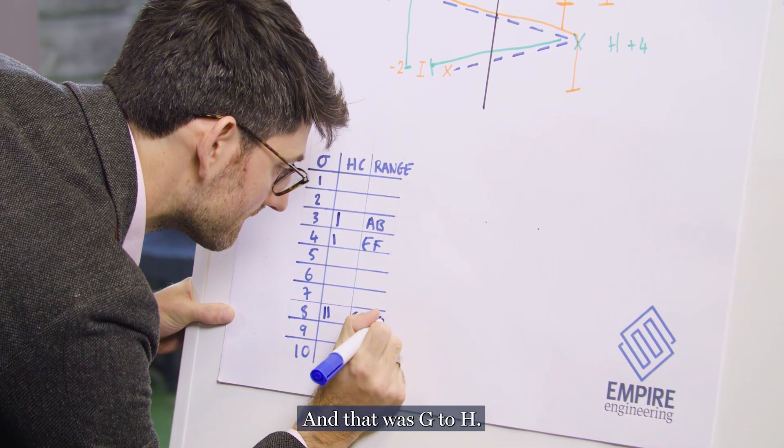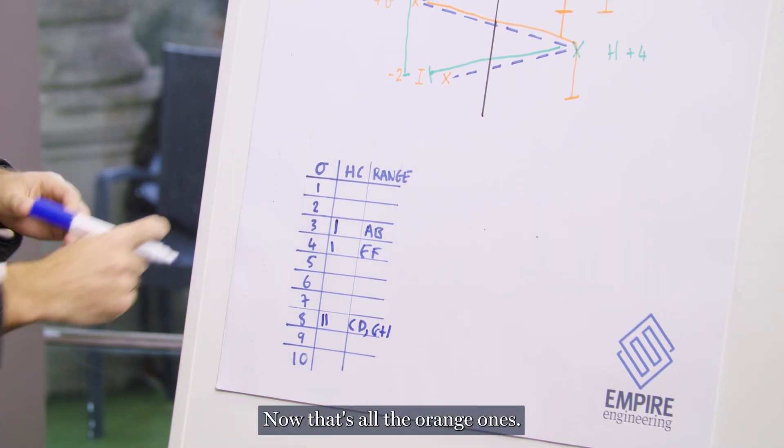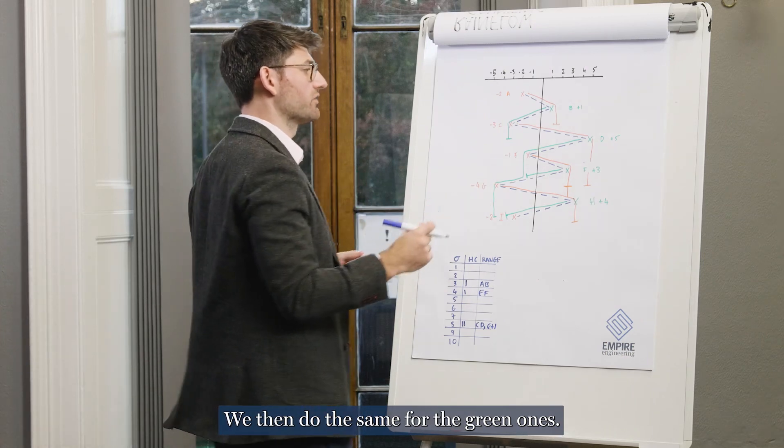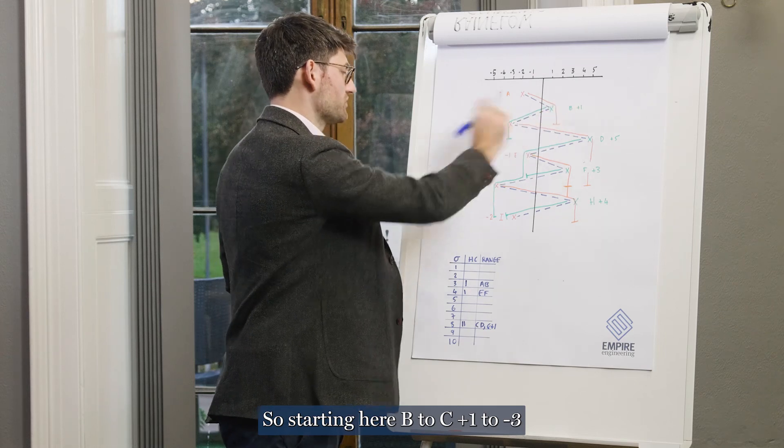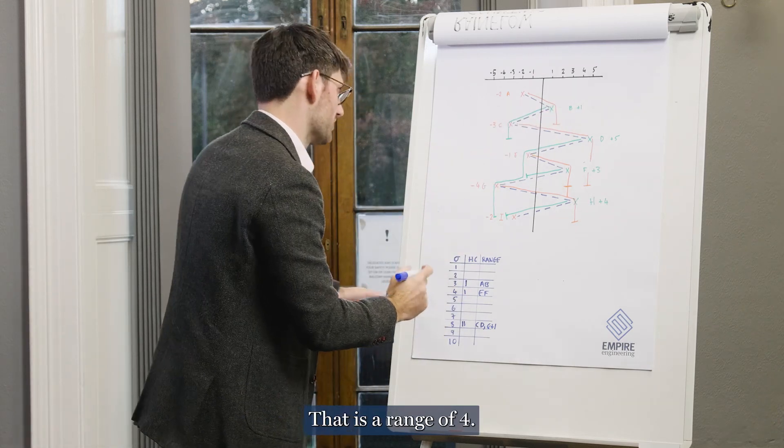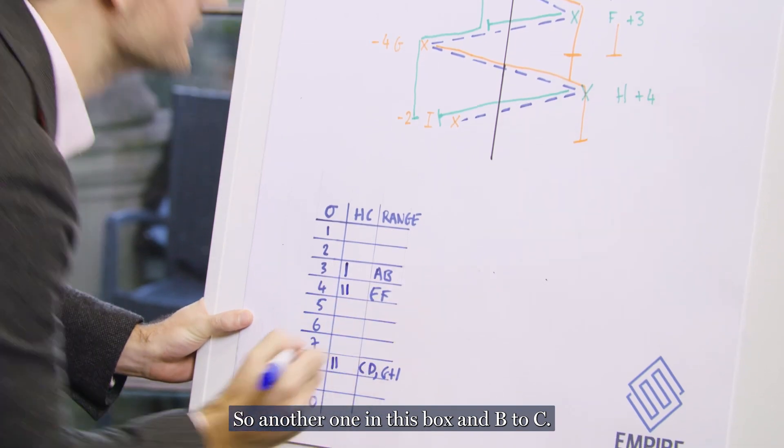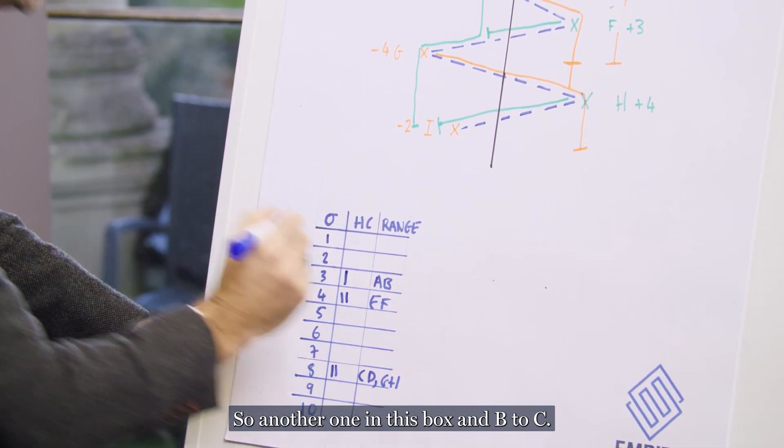And then we do the same for the green ones. So starting here, B to C plus one to minus three, that is a range of four. So another one in this box and B to C.